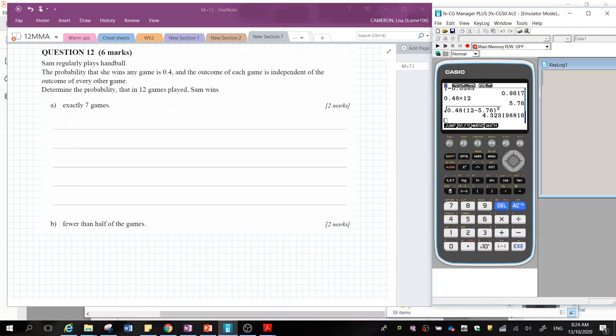Okay, question 12. So Sam regularly plays handball. The probability that she wins any game is 0.4 and the outcome of each game is independent of the outcome of every other game. So that's telling us straight away that it's part of binomial probability because she's playing the game, she can either win or lose and all events are independent.